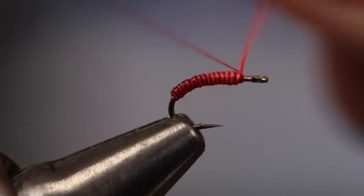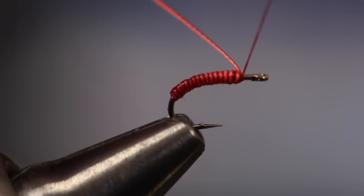At the tie-in point, secure it with a few tight wraps of tying thread. You can then snip it off close.